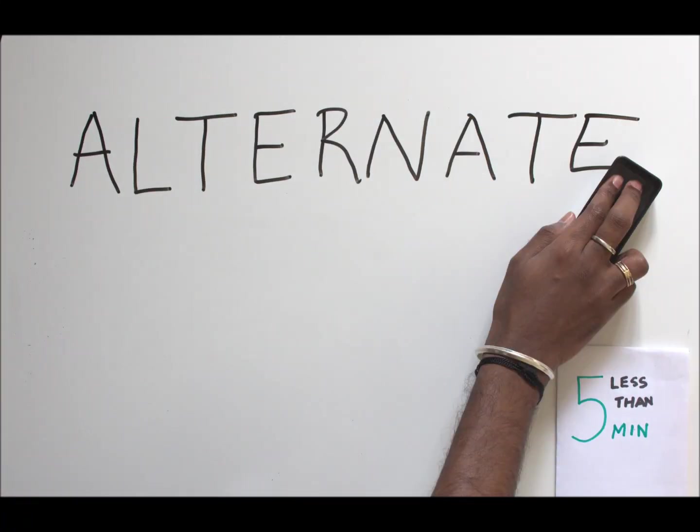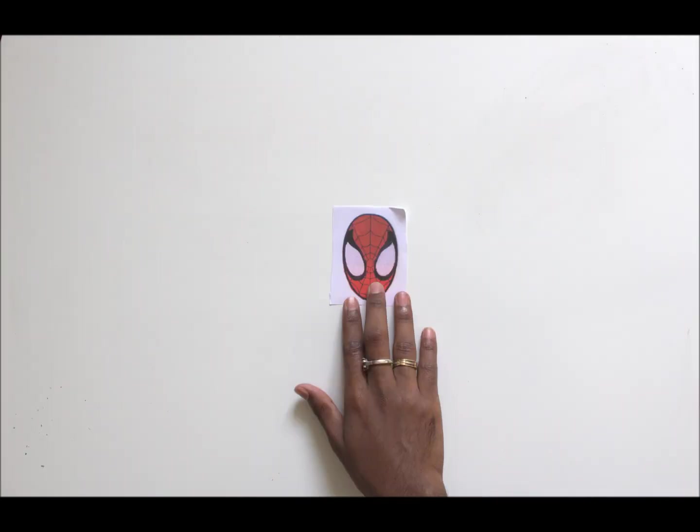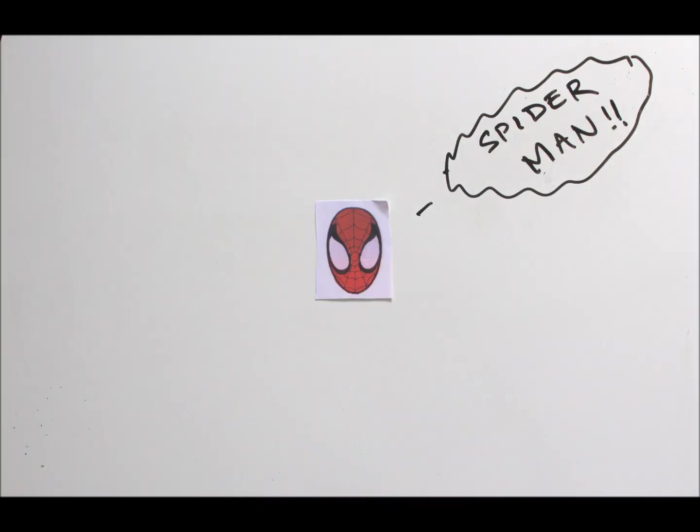Hi and welcome to Less Than 5 Minutes. We're going to be talking today about alternate access mapping. We've all heard or seen people with multiple identities. It's the same person but they have two identities.